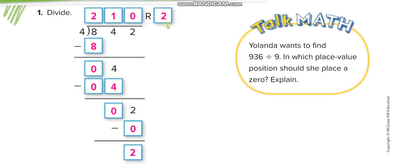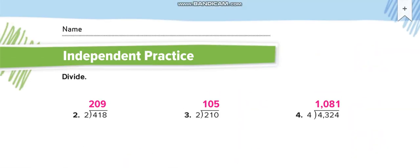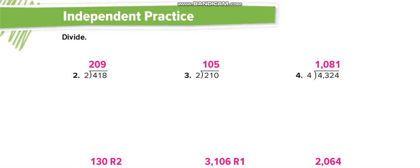So 2 minus 0, remainder is 2. Next one, independent practice guys, but you have to solve it completely. Then you can match your answers through this video. I will show you here.